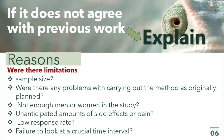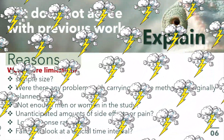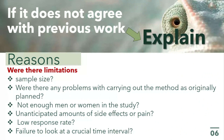A low response rate is another reason, which the researcher often cannot control. Even if participants consented to the study, a low response rate after consent can make results inconsistent with existing literature. Additionally, the failure to observe a crucial time interval — such as different weather conditions from those in which the previous work was conducted — can bring disparity and explain inconsistent results.